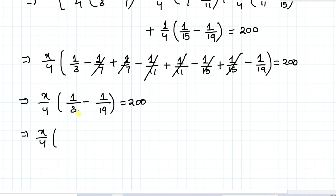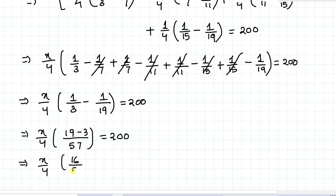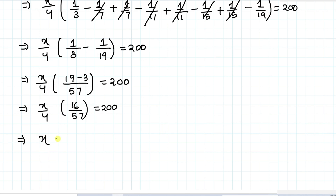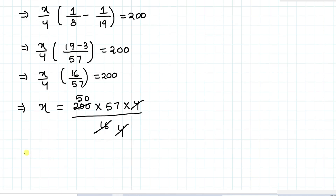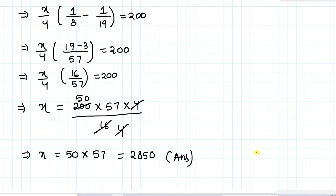This gives x/4 × (19−3)/(3×19) = 200, so x/4 × 16/57 = 200. Cross multiplying: x = 200 × 57 × 4 / 16. Since 16/4 = 4 and 200/4 = 50, we get x = 50 × 57 = 2850. That is our answer. I hope you understood the solution. Thanks for watching, please subscribe to my channel.